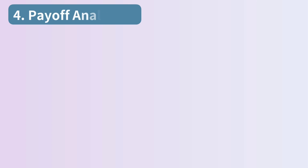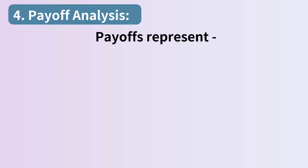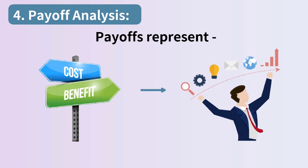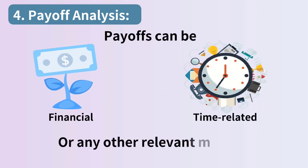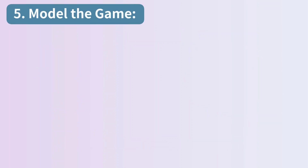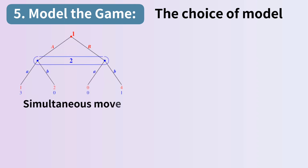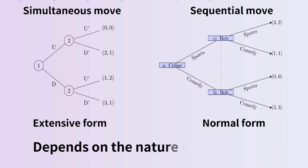Step 4: payoff analysis. Assign numerical payoffs or utility values to each possible outcome of the game. Payoffs represent the benefits or costs associated with the various combinations of strategies chosen by the players. Payoffs can be financial, time-related, or any other relevant metric. Step 5: model the game. Choose an appropriate game theory model to represent the strategic interactions. The choice of model — for example, simultaneous move, sequential move, extensive form, or normal form — depends on the nature of the problem.